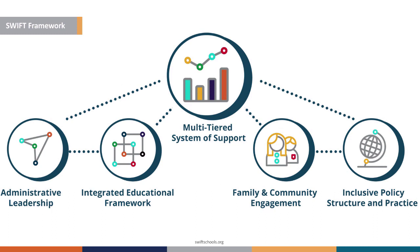You may be familiar with the SWIFT framework. Here we have five domains and ten features. You'll see on the left: administrative leadership, integrated educational framework, family and community engagement, and inclusive policy structure and practice. At the top, we have MTSS or multi-tiered system of support.